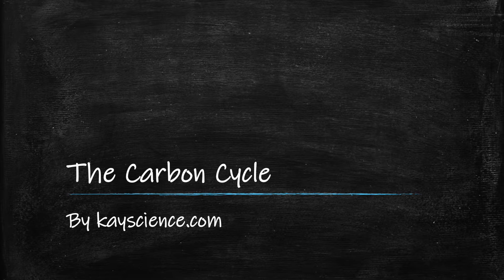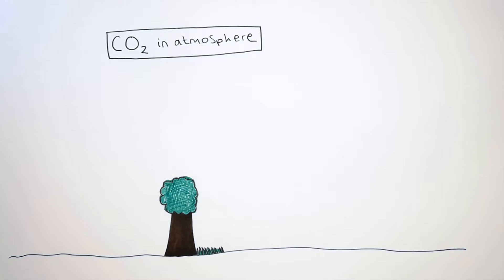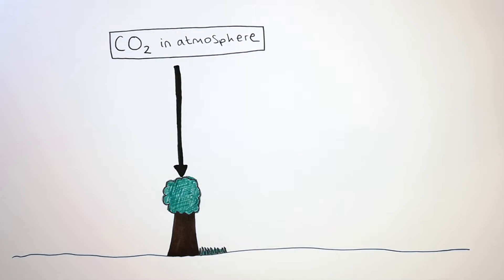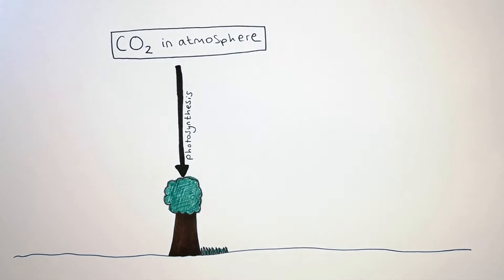The Carbon Cycle by kscience.com. Carbon exists in our atmosphere as carbon dioxide, CO2, and it is transferred from the air, the atmosphere, into trees and plants by photosynthesis.